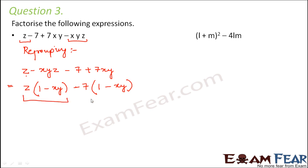Now let's compare this term and this term. What do you have in common? 1 - xy is common. So what are you left with? You are left with z - 7. So this is the answer.